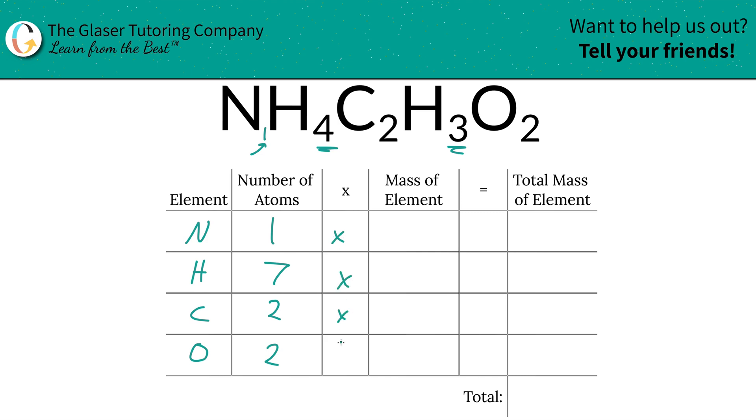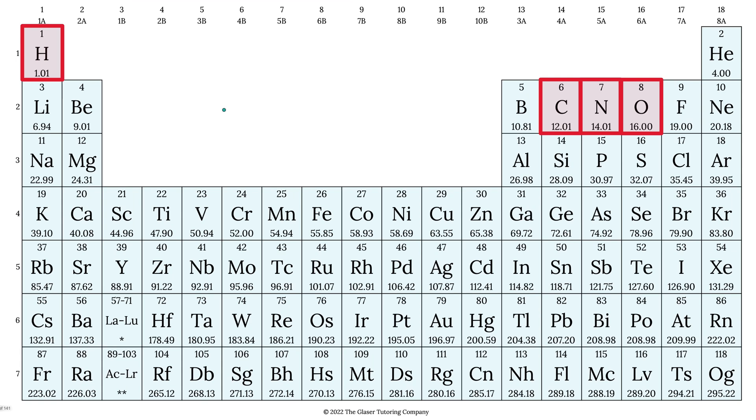We're going to take those number of atoms, then multiply it by the mass of each element, and that's where the periodic table comes into play. So we've highlighted all the elements. Hydrogen is 1.01, carbon is 12.01, nitrogen is 14.01, and oxygen is 16.